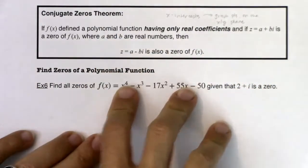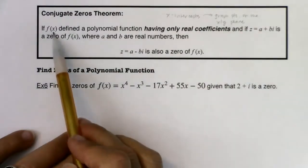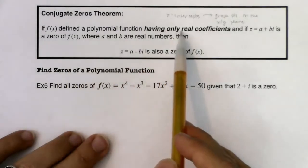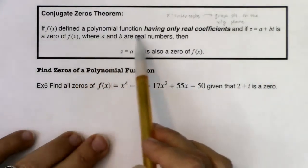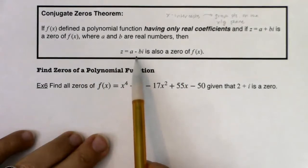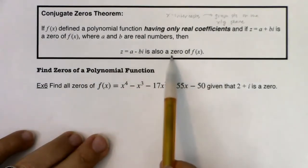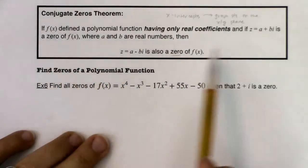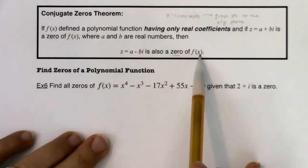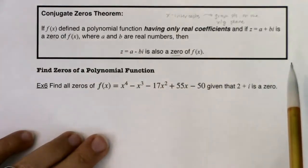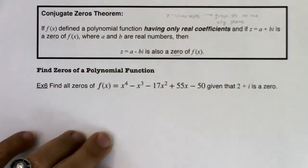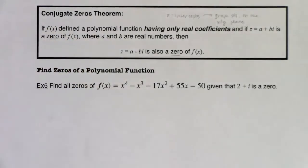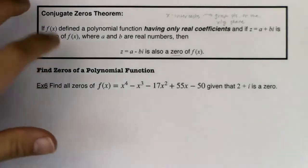Let me read the conjugate zeros theorem. If f of x is defined as a polynomial function having only real coefficients, and if this complex number a plus bi is a zero of f of x, where a and b are real numbers, then its conjugate a minus bi is also a zero of the function. If I plug a plus bi into my function, or I plug a minus bi into my function, I do get zero back out. It zeros out my function, but it fails to be an x-intercept because I can't graph imaginary numbers in the real Cartesian coordinate system. This will be the one time that I'll use the term zeros rather than x-intercepts.